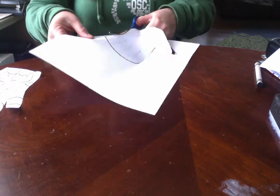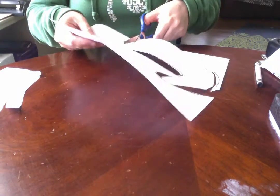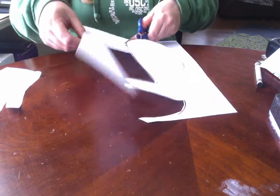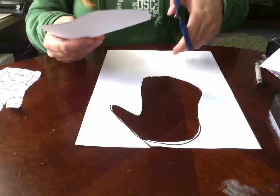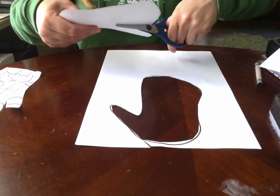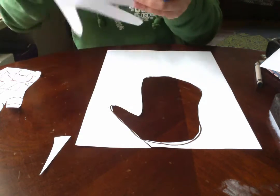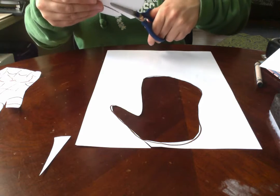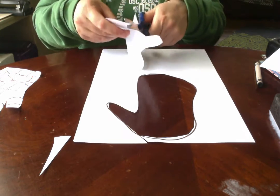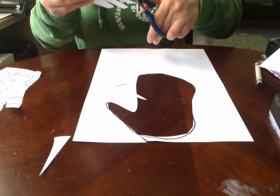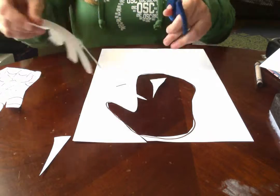You could remind them to use their helper hand to guide them. Okay, so this would be the mitt and then you would have to cut out each individual finger. Just like that. Good.